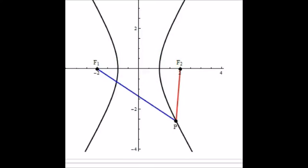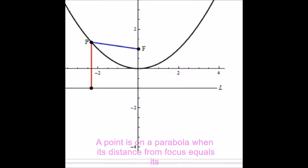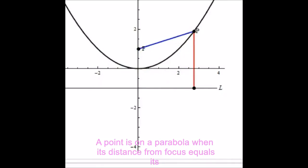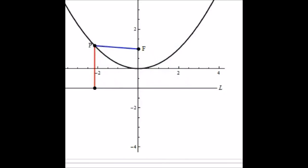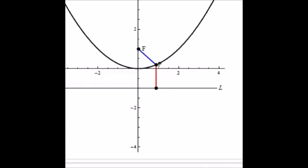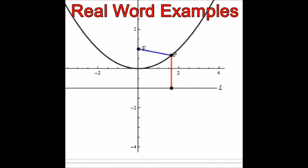Finally, we have the in-betweener case, which is the parabola. The parabola can be defined by having just one focus point, F, and a line which we call the directrix. It's defined as the set of all points for which the distance to the focus point equals the perpendicular distance to the directrix. So the red line at right angles to the directrix should be the same length as the blue line linking point P to focus F — and if that's true, you're on the parabola.